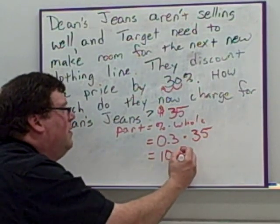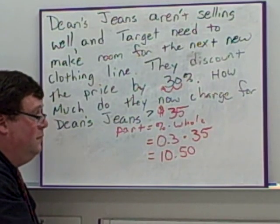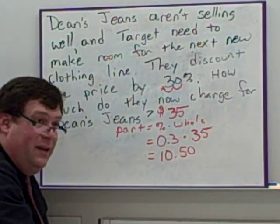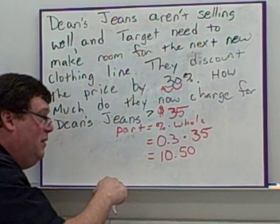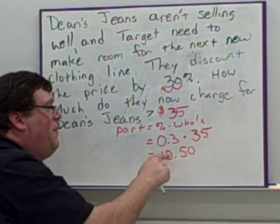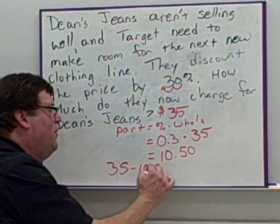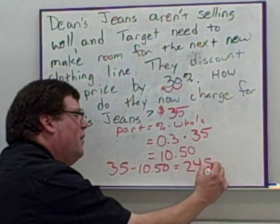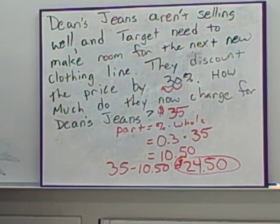And we're going to get $10 and 50 cents. So the discount is $10.50. That's not how much you're paying, that's how much the discount is. The sales price, what they're charging, is going to be the $35 minus $10.50, which is going to give me $24.50. That's the discounted sale price of those jeans.